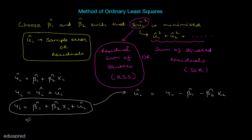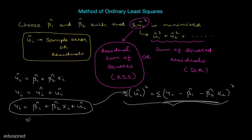We are interested in summation of ui hat squared. So if ui hat equals that expression, then the square of ui hat equals the square of that expression, and we apply a summation sign over it. So the summation of ui hat squared equals that squared term. This is the mathematical expression we have for the residual sum of squares.